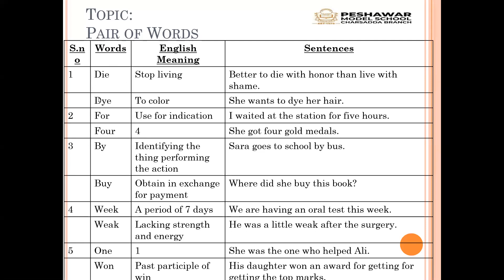The second word of this pair is 'dye' — D-Y-E — to color something, jab kisi cheez ko rang dete hain. The sentence is: 'She wants to dye her hair.' Woh apne baal rangna chahti hai. Keep one thing in mind — the singular and plural of 'hair' are both 'hair.' We do not say 'hairs' — that is wrong. So the two words have the same pronunciation but different spellings and different meanings.